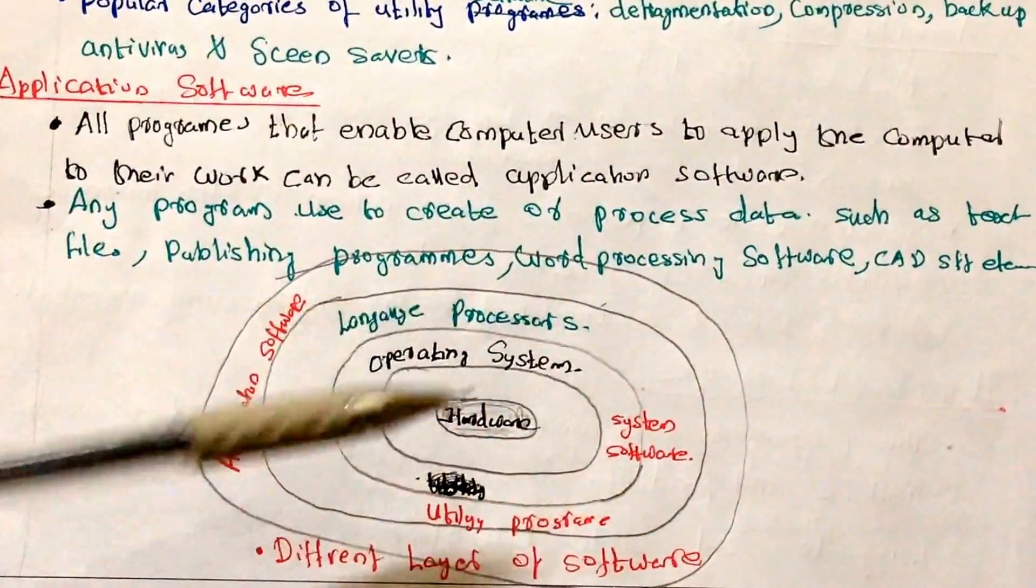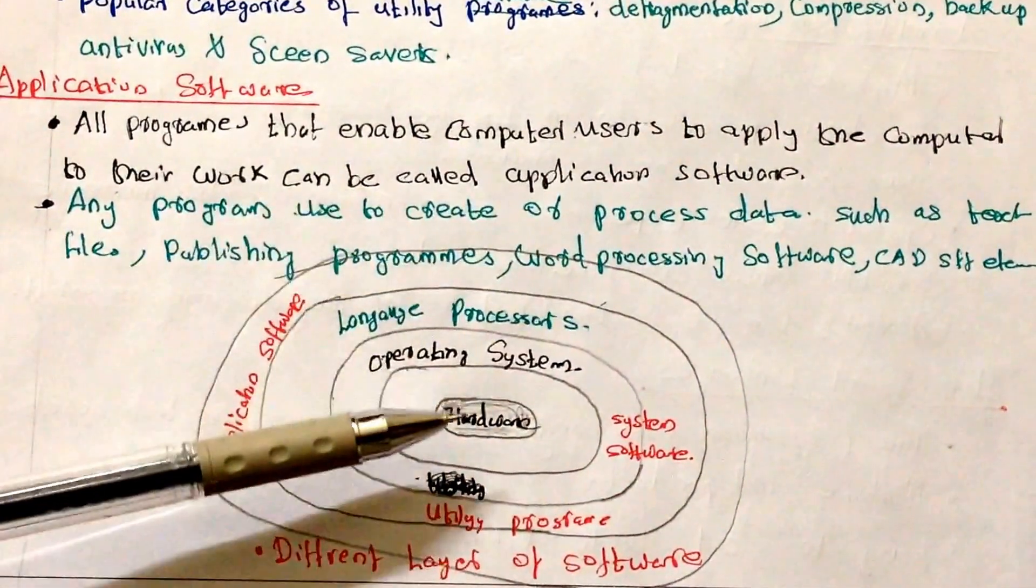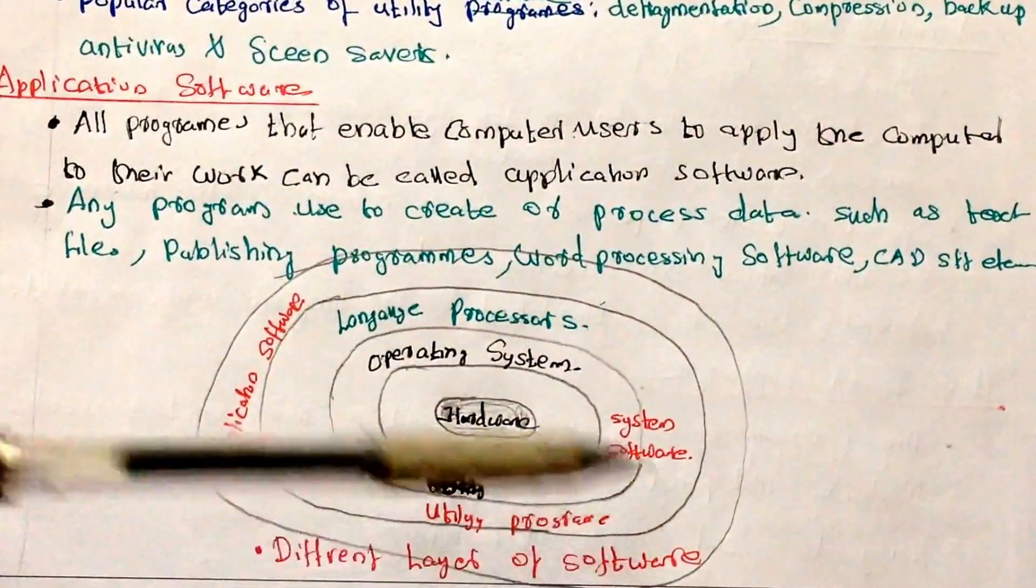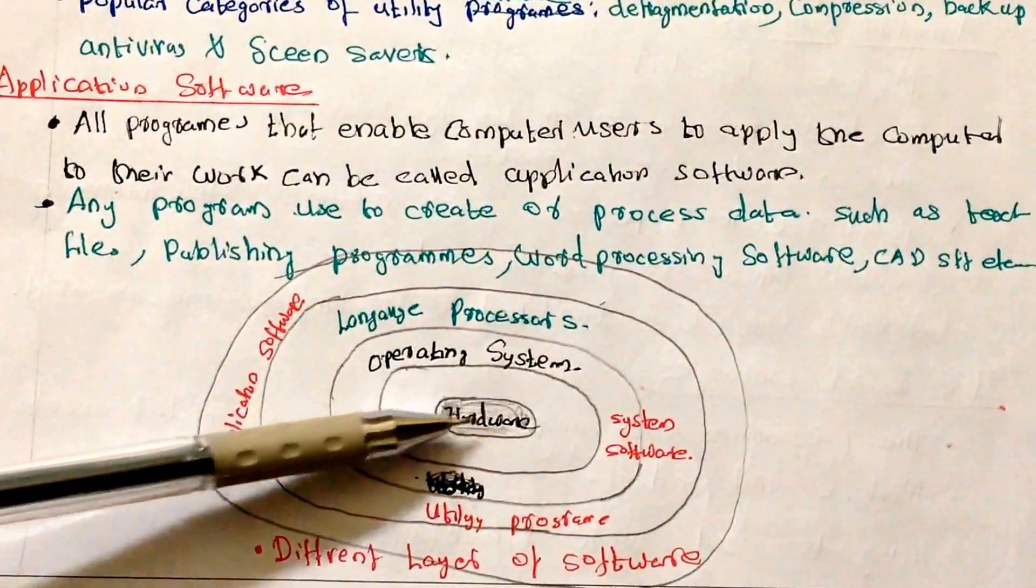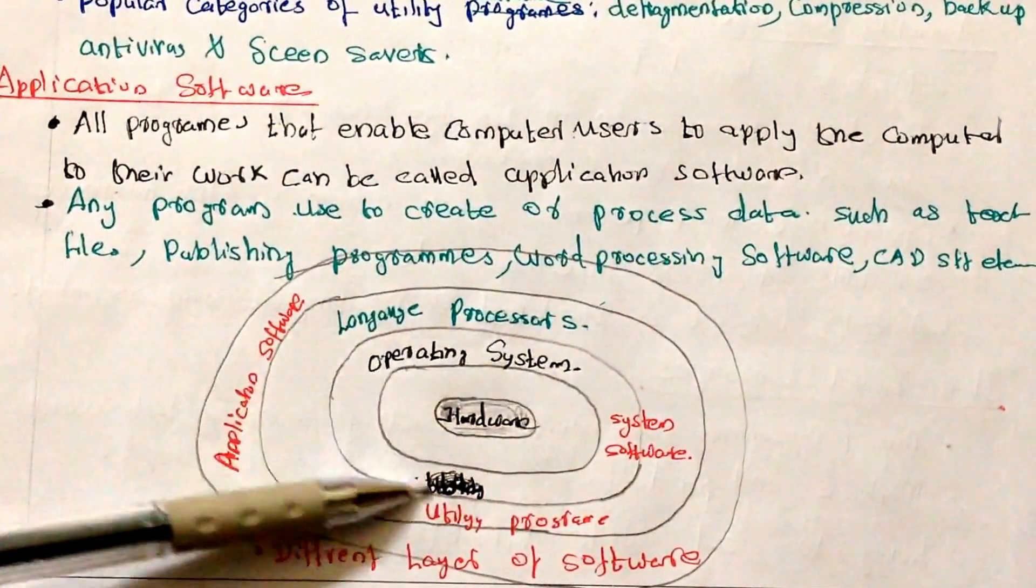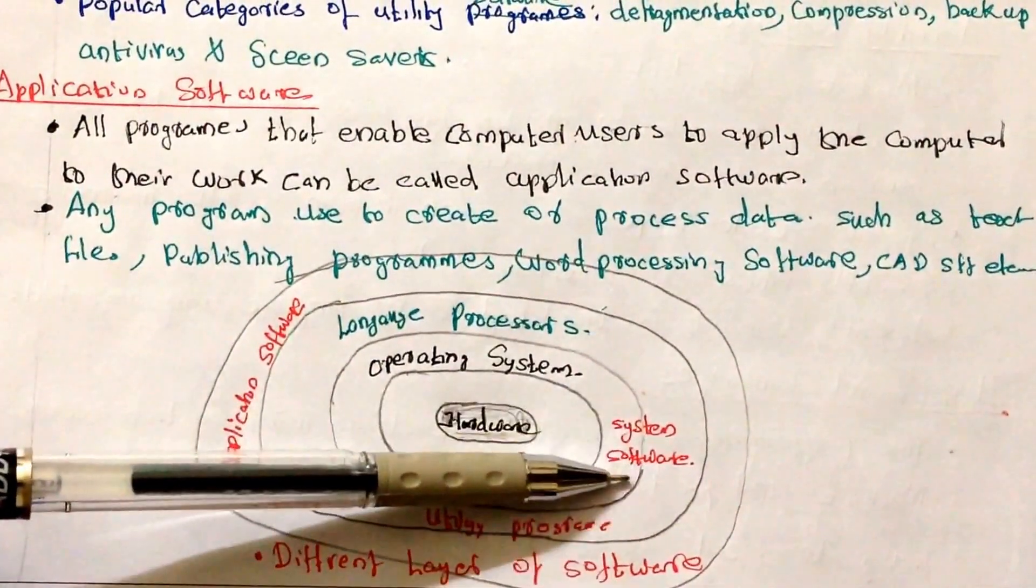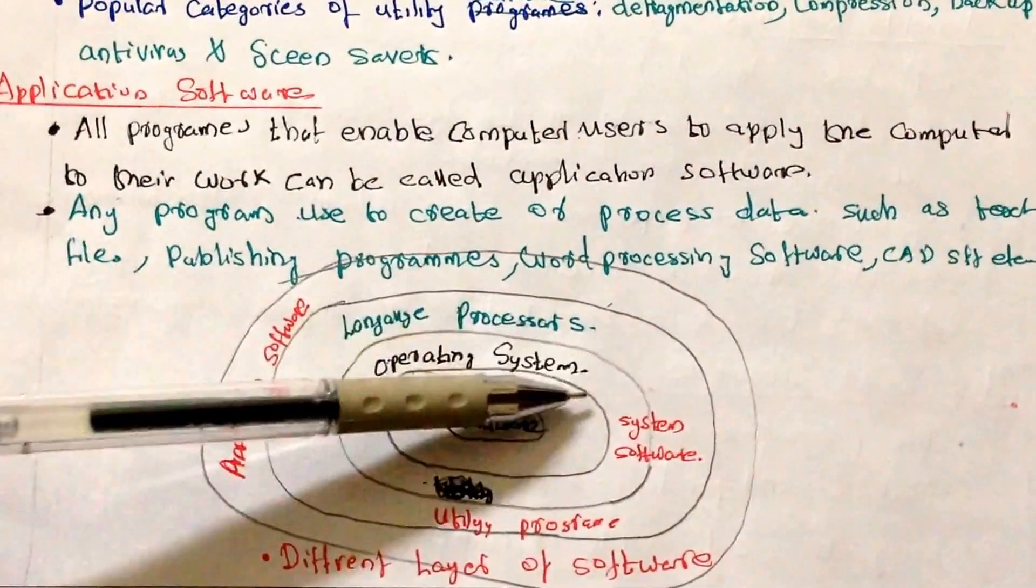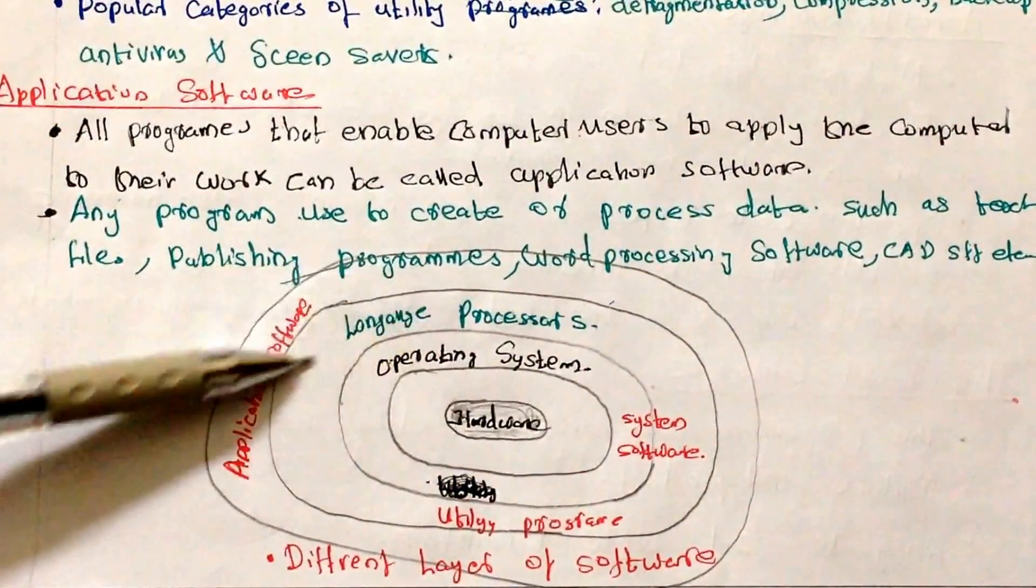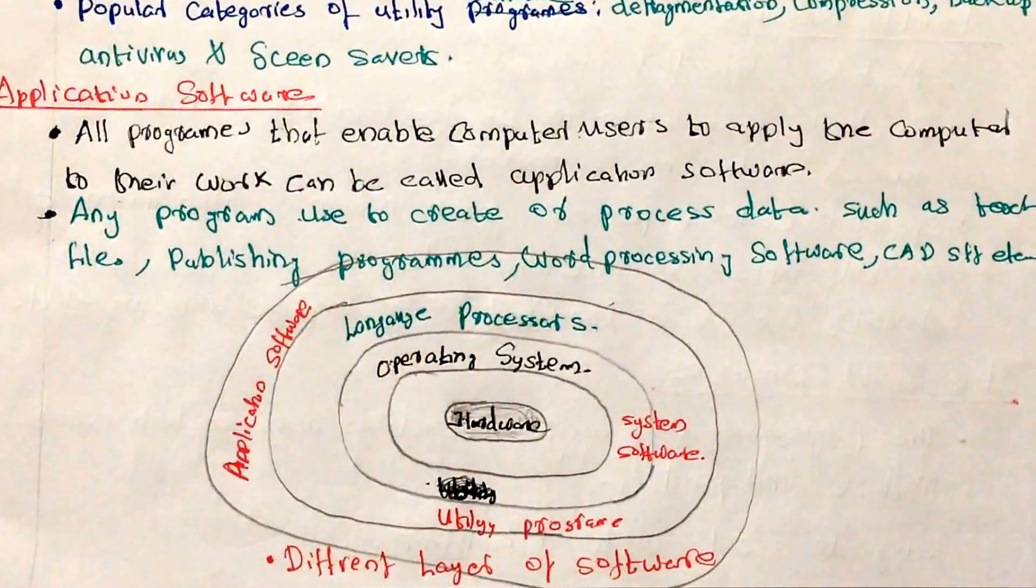So you can see just a small diagram is there. Sorry it was quite messy. So I'll explain you. So this is a different layer of a software. At the middle it will comes hardware. After that it will come the operating system. In between hardware and operating system it will come the system software. Then language processors will come the different next layer. And at the last layer application software will be coming which will be directly contacting with the users.